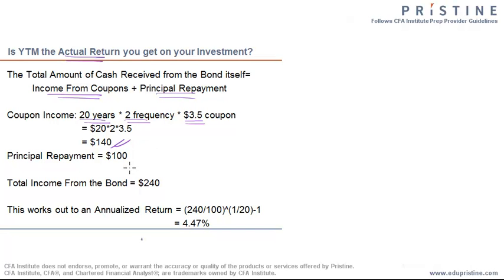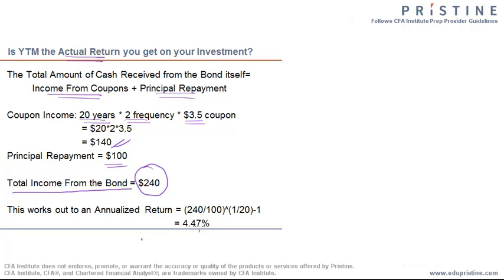Your principal repayment would be $100. So the total income generated by the bond is $240. Annually, this works out to be 4.47%. Just remember, the YTM is 7%.